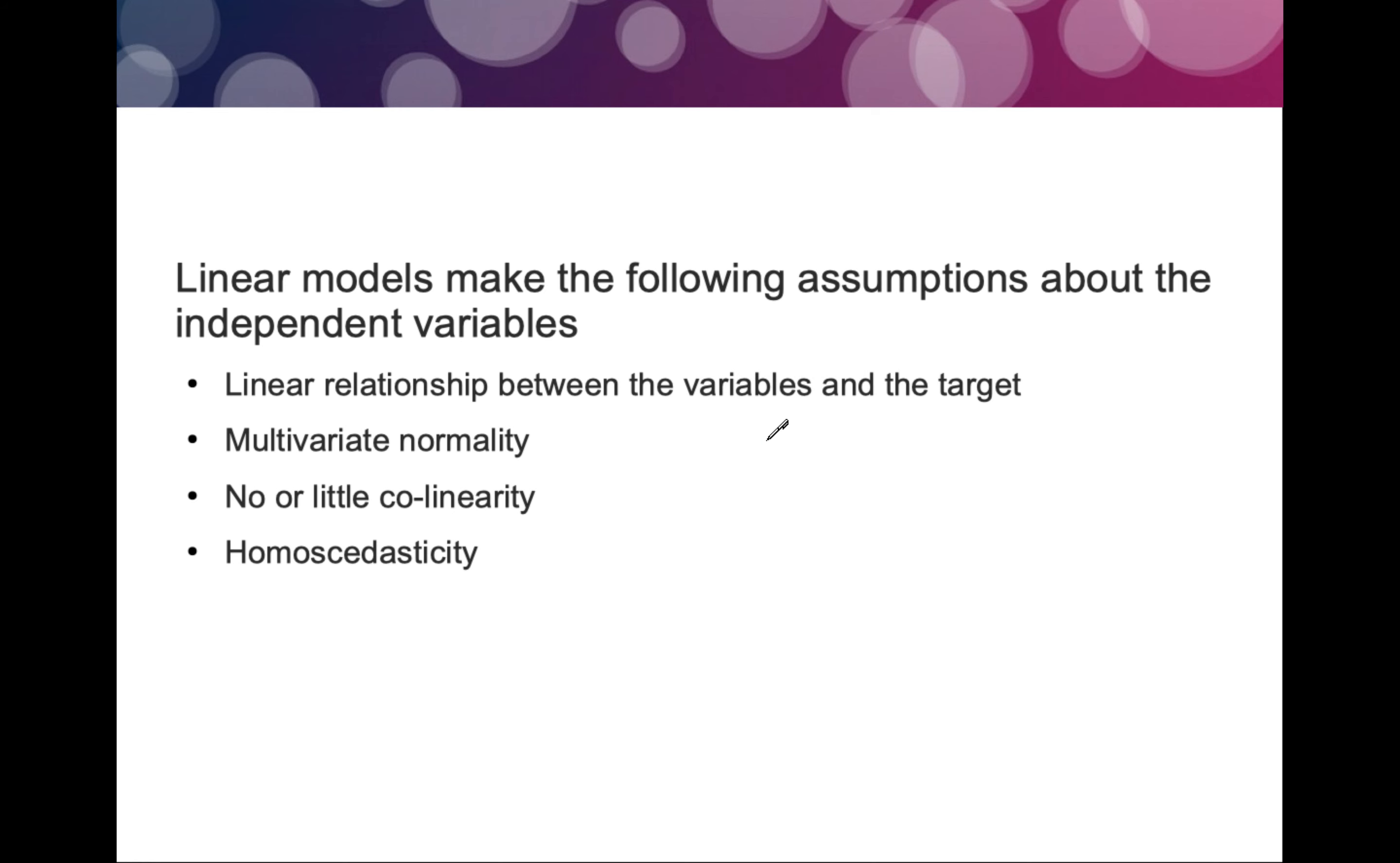Let's first understand what linear model assumptions are. Linear models make the following assumptions about independent variables: linear relationship between the variables and the target - that means the X's and the Y, where Y is the target and X's are the variables or features. Multivariate normality has to be maintained. No or little collinearity, meaning correlation is not there. And homoscedasticity.